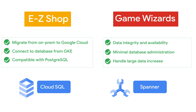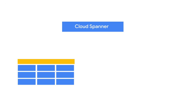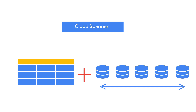You can see from these examples how Cloud SQL and Spanner can serve different business needs. Spanner is unique as it has the benefits of relational databases with the horizontal scalability you would normally expect from a non-relational database.